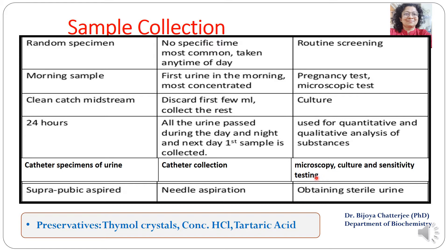Catheter collection generally yields sterile urine. The sixth type is suprapubic aspiration — both catheter and suprapubic collection are invasive techniques requiring apparatus inserted into the body. Suprapubic aspiration is used to obtain sterile urine from pediatric patients or patients having difficulty passing urine. Commonly used preservatives include thymol crystals, concentrated HCl, and tartaric acid. If the urine sample needs longer time for analysis, it should be refrigerated to prevent bacterial growth and pH changes.